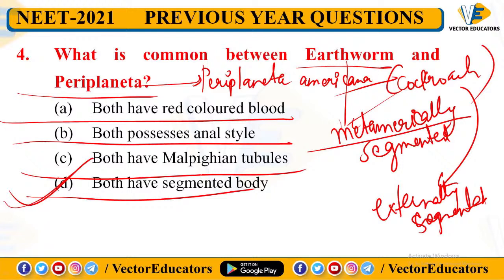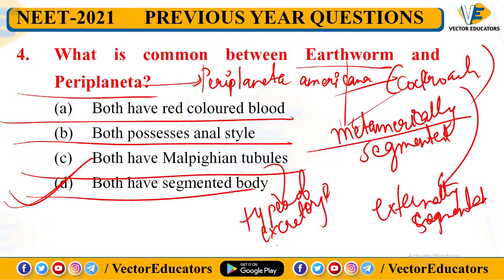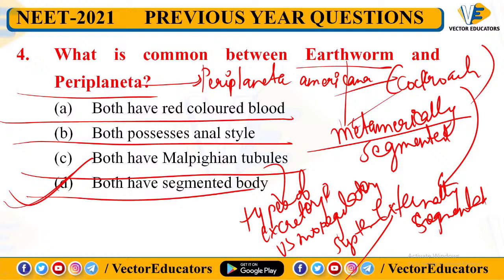Regarding Malpighian tubules: these are a type of excretory and osmoregulatory system. Earthworm does not have Malpighian tubules, so their excretory systems are not the same. But both have segmented bodies, confirming D is correct. Next question: the flightless bird among the following is — options are Columba, Neophron, Struthio, and Corvus.